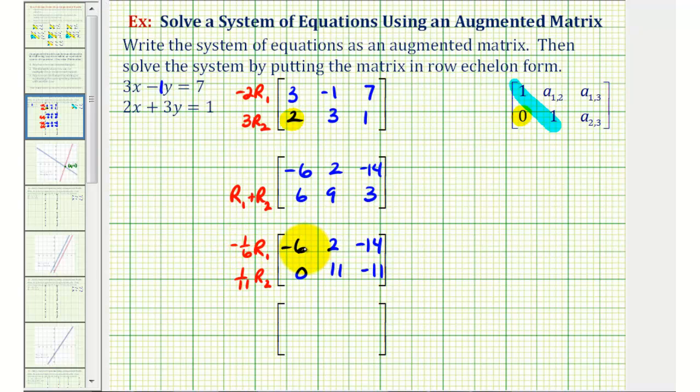Well negative one-sixth times negative six is positive one. That's why we're multiplying by negative one-sixth. Negative one-sixth times two is negative two-sixths, or negative one-third. And negative one-sixth times negative fourteen is positive fourteen-sixths, or positive seven-thirds.